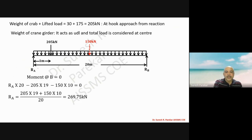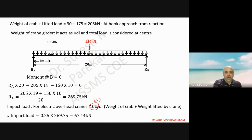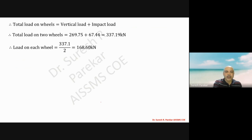The value of RA comes to 269.75 kilonewton. For impact load, we consider 25 percent of weight of crab and weight lifted by crane. So impact load is 0.25 into 269.75, giving 67.44 kilonewton. Total vertical load on two wheels is 269.75 plus 67.44 equals 337.19 kilonewton, which shared by two wheels gives 168.60 kilonewton per wheel. Factored wheel load is 252.9 kilonewton.